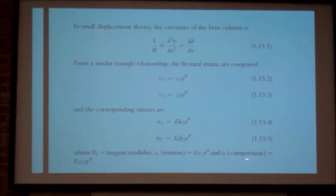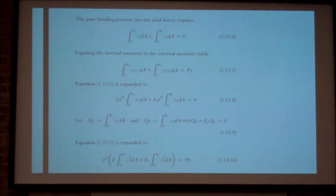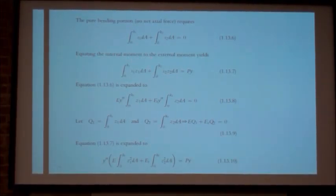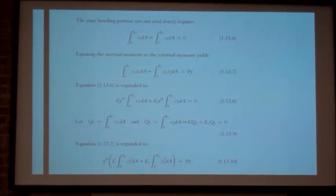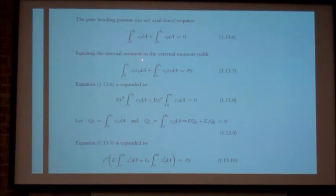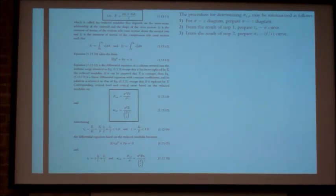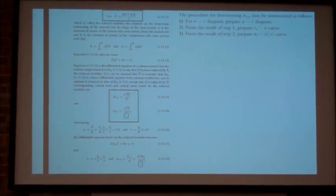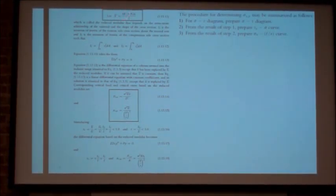We have E sub t as our tangent modulus. S1 is tension, S2 is compression. Continuing on, the bending moment is given by this equation, and equating the internal moment to the external moment yields this equation. This equation is expanded to this differential equation, and this is further expanded. That all basically leads to where we have our P-critical.